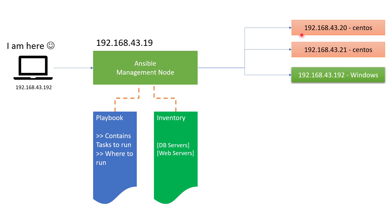I also have two more CentOS servers: 192.168.43.20 and 192.168.43.21. We are also going to interact with a Windows server — since I don't have an additional Windows server, I will use Ansible to connect back to my workstation at the same IP address. As mentioned, to connect to CentOS (Unix-based) systems we use SSH, and to connect to Windows we use WinRM. So that's all — let's do some hands-on.